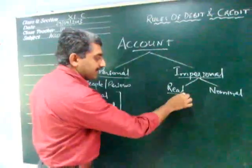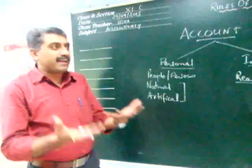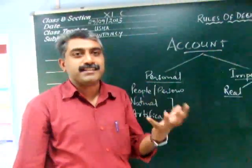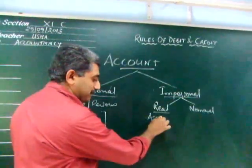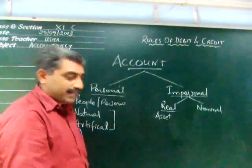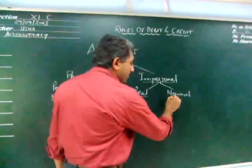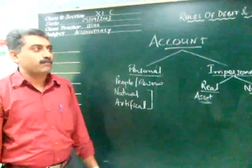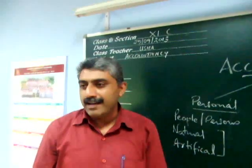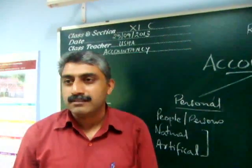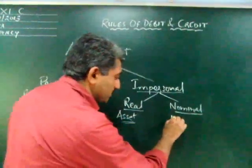Real account, as the name indicates, deals with something which has a physical appearance in reality. Things which have a physical appearance in business are called assets, so real account deals with assets. Nominal account deals with things that have a day-to-day effect on the business — these are your expenses, incomes, losses, and gains.